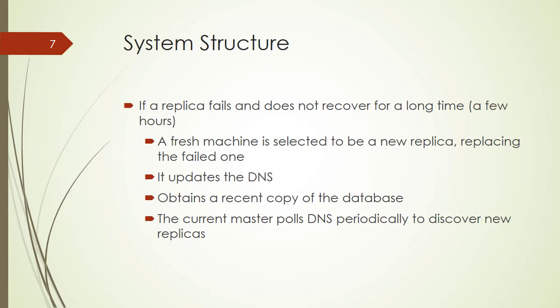If a replica fails and does not recover for a long time — a few hours — a simple replacement system selects a fresh machine from a free pool and starts the lock server binary on it. It updates the DNS and obtains a recent copy of the database. The current master polls DNS periodically to discover new replicas.